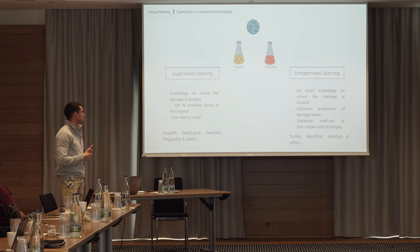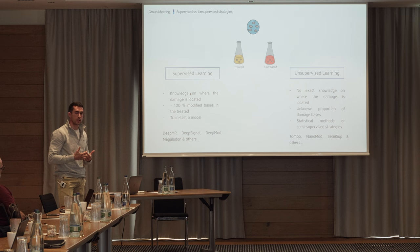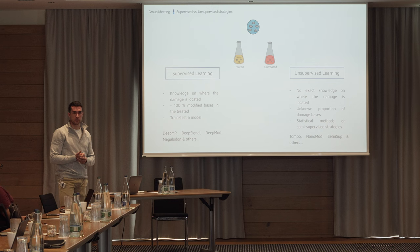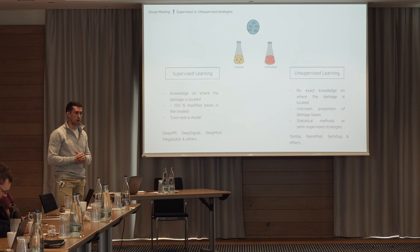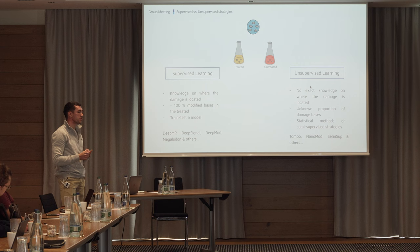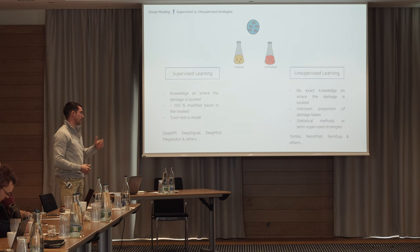Those methods are in the supervised learning world—you have treated and untreated samples, but you have knowledge of where the damage is located. Either 100% of the treated sample is damaged, or you have a way to locate the damage, giving you the possibility of splitting train/test sets and building a model. That is the case for DeepMP, DeepSignal, DeepMod, Megalodon, etc. However, the case we are studying is more in the unsupervised world—there is no exact knowledge of where the damage is located, and we don't know the proportion of damage. Methods like Tombow, Nanomod, and SemiSoup use semi-supervised approaches comparing treated against untreated reads with statistical methods.